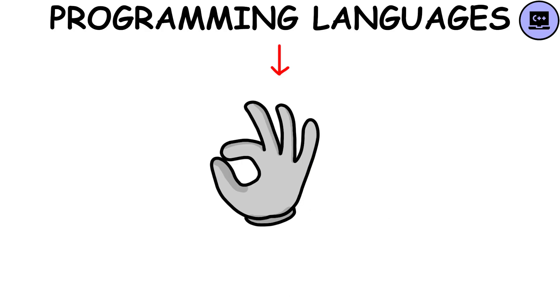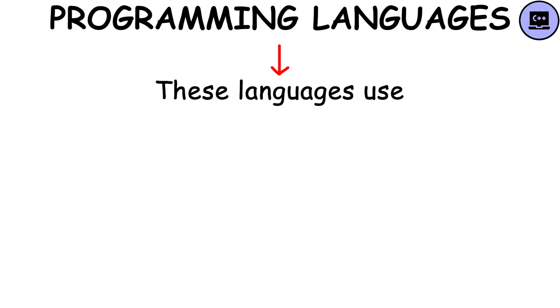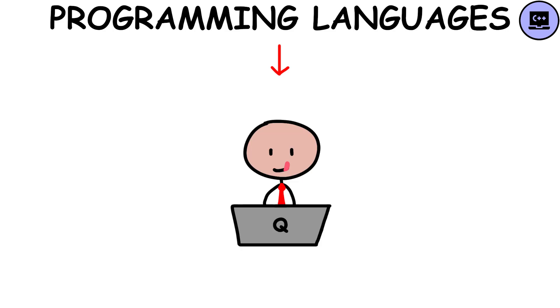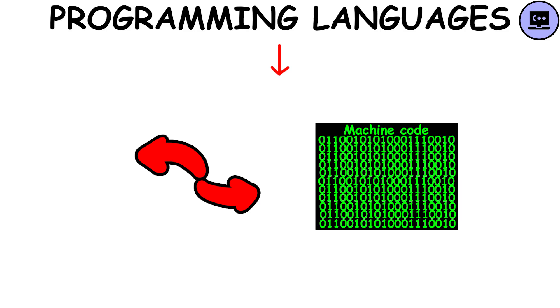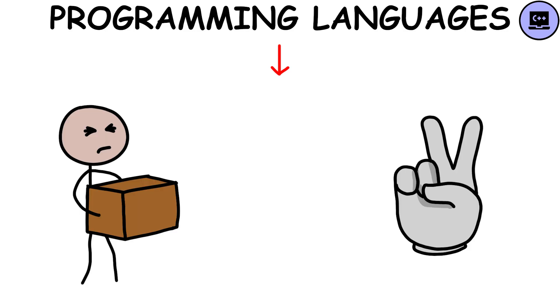The most effective way to make a computer perform useful tasks is through programming languages. These languages use abstraction, allowing you to write code that is more understandable and manageable, which is then converted into machine code. There are two main types of programming languages based on how they handle this conversion.